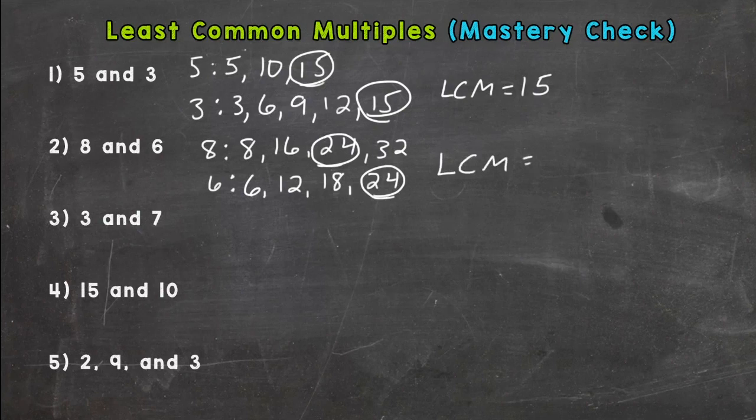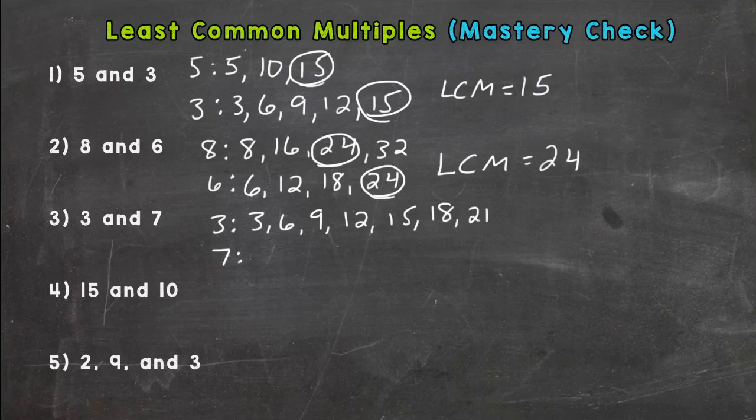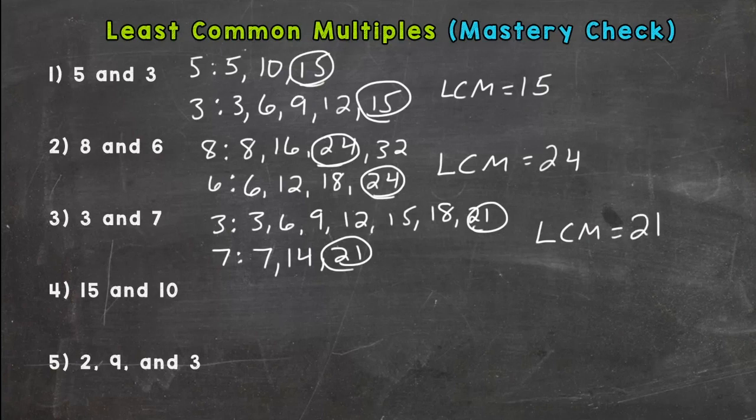Number 3, we have 3 and 7. 3, 6, 9, 12, 15, 18, 21. 7, 14, 21. They match at 21, so our LCM is 21. If your lists look different than mine, that's not a problem at all.